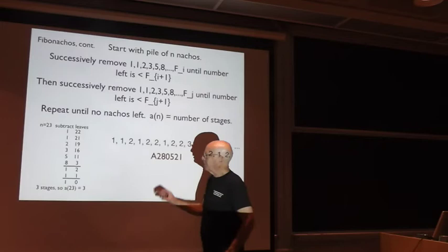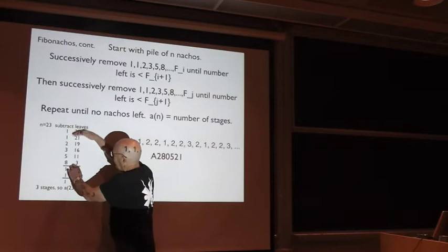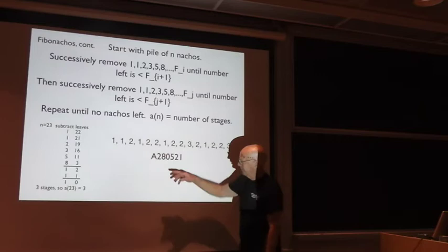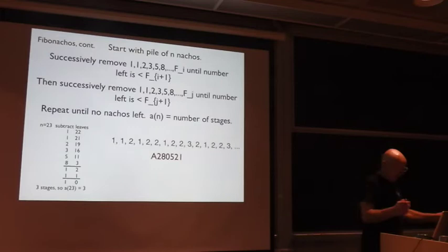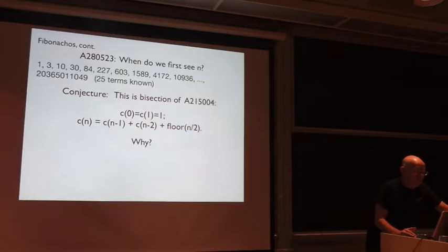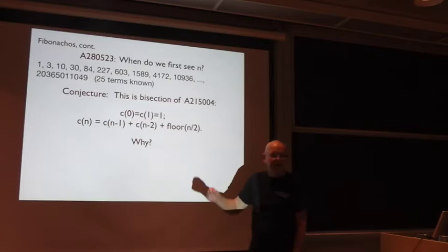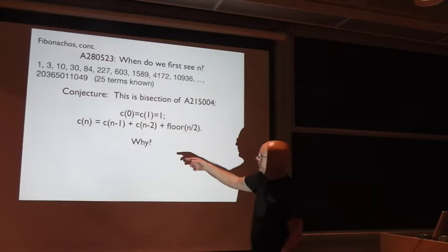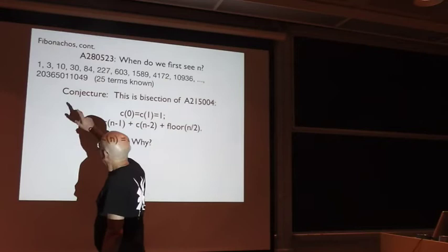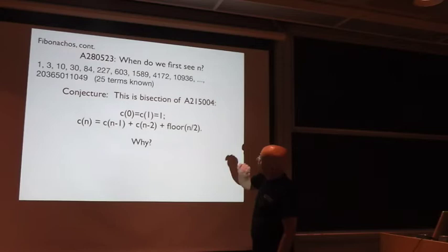It's a number of stages where you start with n chips and you remove them in this way. Of course what you're really doing is looking for the partial sums of the Fibonacci numbers and subtracting them in the greedy way until you get out. Anyway, so the sequence is 1, 1, 2, 1, 2, 2, 1, 2, 2. And I mention this because there's a nice conjecture about when we first, if you look at the records, so the first time it takes 3 steps, 3 stages to get down to 0, the first time it takes 4 stages and so on, you get to sequence 1, 3, 10, 30, 84 and so on, and we know 25 terms and they grow pretty quickly.